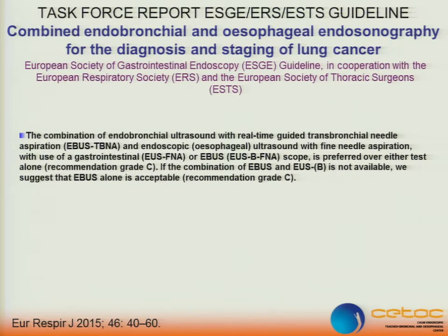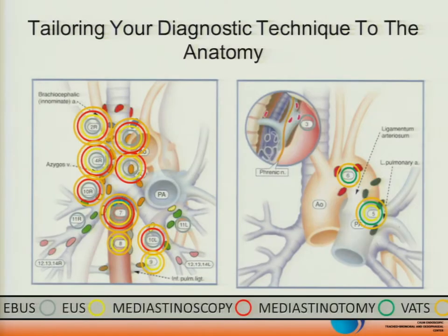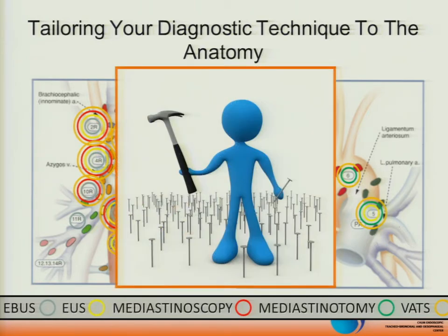These are the new guidelines from the ESGE, ERS, and ESTS, which just came out in the last few months. A combination of EBUS with real-time transbronchial needle aspiration and EUS with final aspiration — using an EUS scope or EBUS scope — is preferred over either test alone. This is a Grade C recommendation, and if the combination is not available, EBUS should be the first-line test. These tools are really complementary: if you can work together with your colleagues in gastroenterology, thoracic surgery, and radiology, you'll obviously give the best workup for each specific patient.